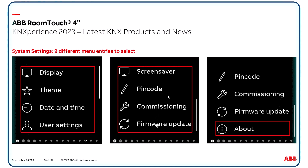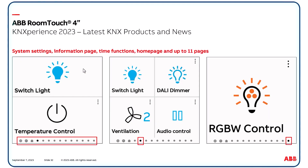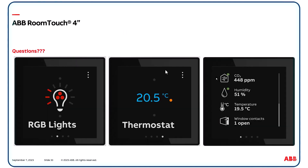Execution of firmware update is also available. The About section gives some product information like the KNX address. Pages with a light background theme are also available, adjustable by the user. In summary, beside system settings and the information page, there is a page timer function where the user can adjust settings easily. The home page is shown when approaching the Room Touch, with up to 11 further pages with functions behind. Before we get to the questions, I would like to say thank you for listening.